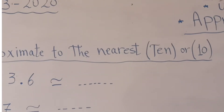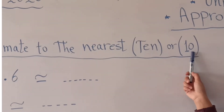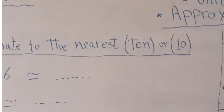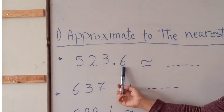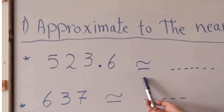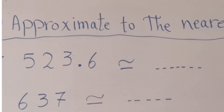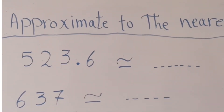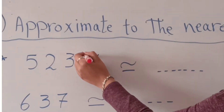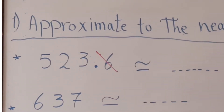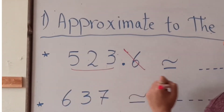I can write the question as approximate to the nearest ten with letters or with digits. For example, we have 523.6. This is the sign of approximation. I want to approximate this number to the nearest ten. I should cross the decimal part, because the nearest ten means we are in the whole part. This is the whole part.